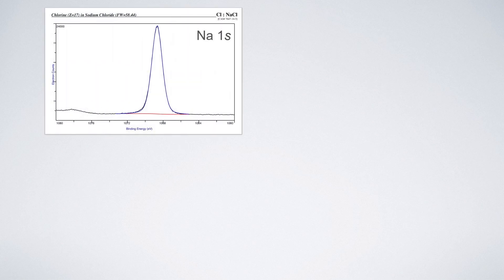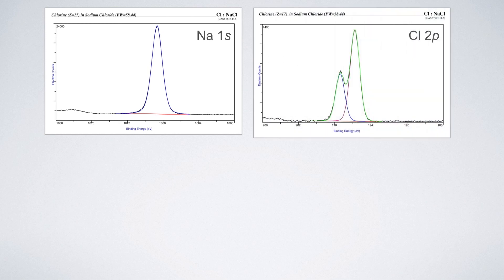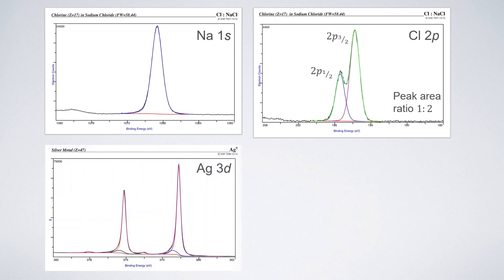Let's look at some examples. First is sodium 1s — the electrons are in 1s orbitals, so this peak will not split and shows only a single peak. Second is chlorine 2p, which is split into 2p1/2 and 2p3/2 spin states. From the image you can see that the peak ratio is 1:2, as we calculated for p orbitals.